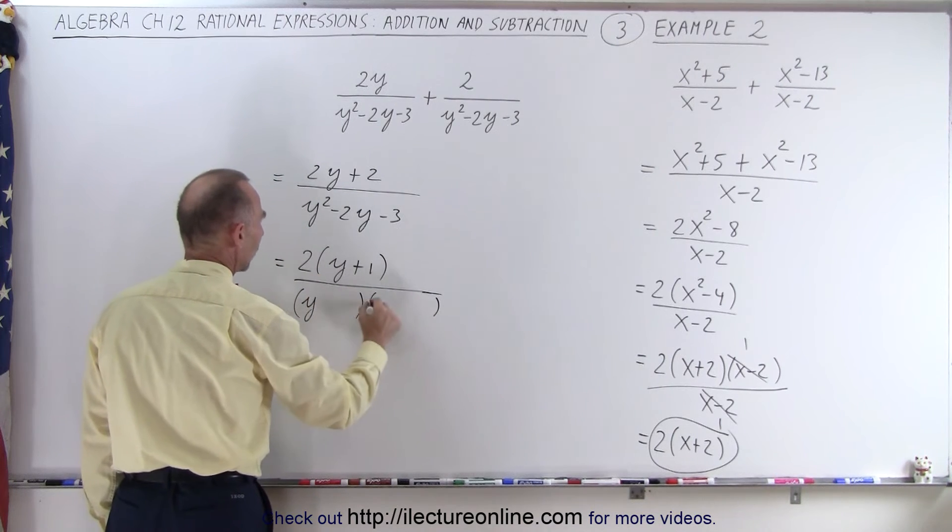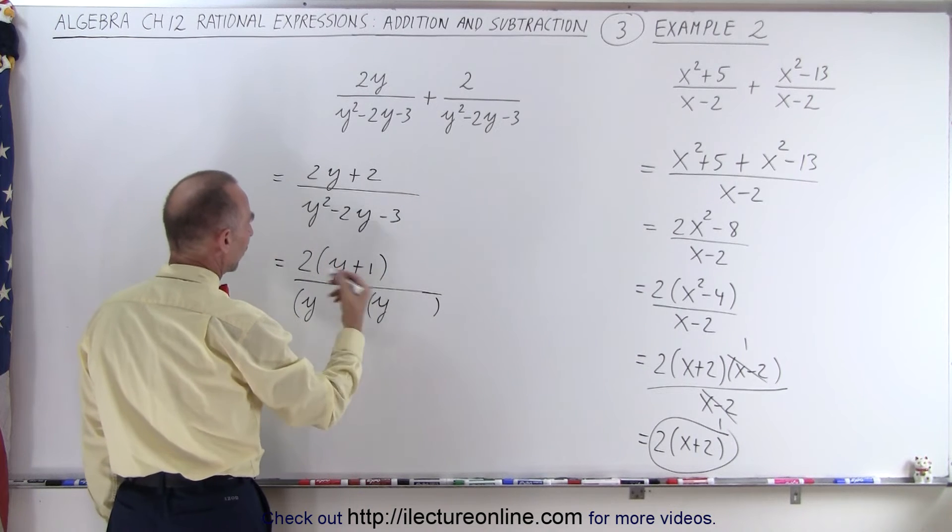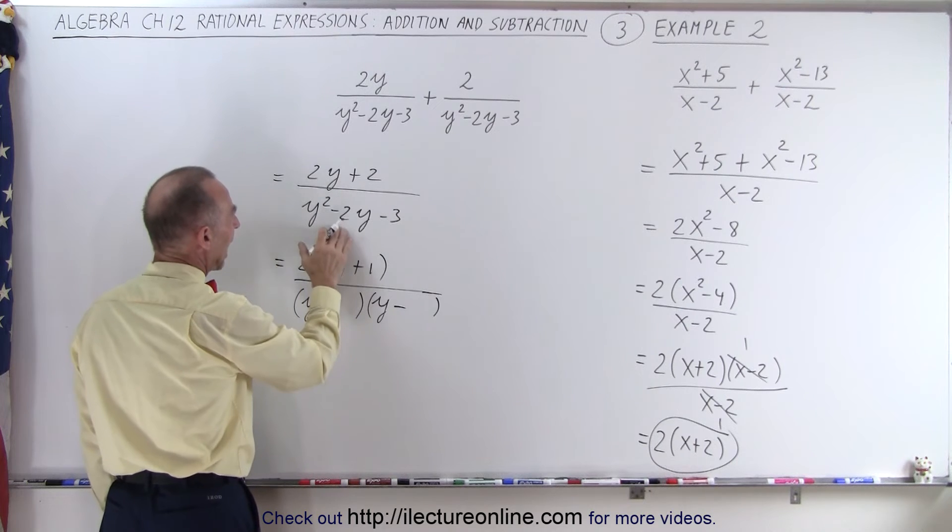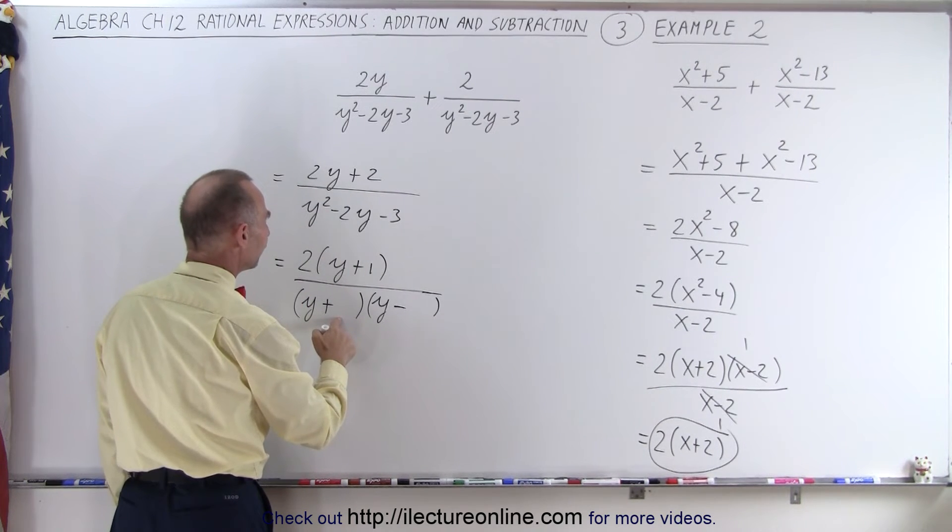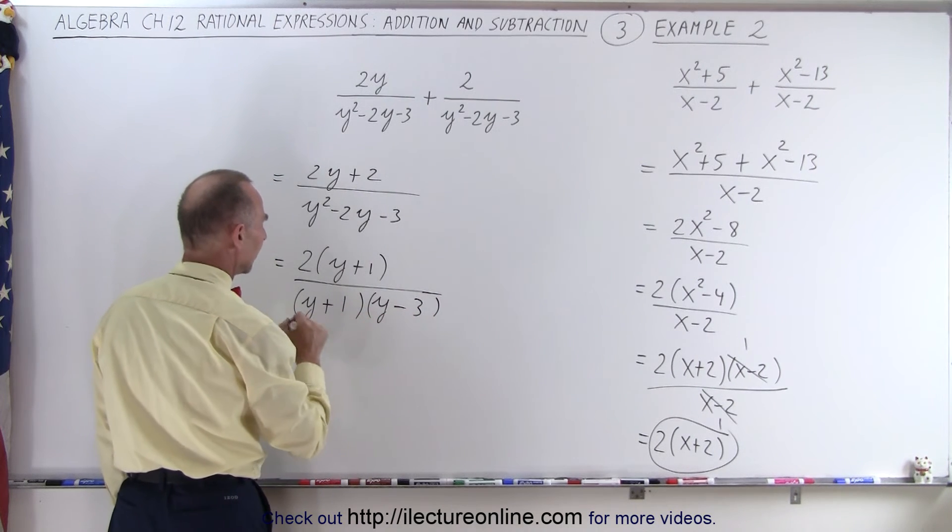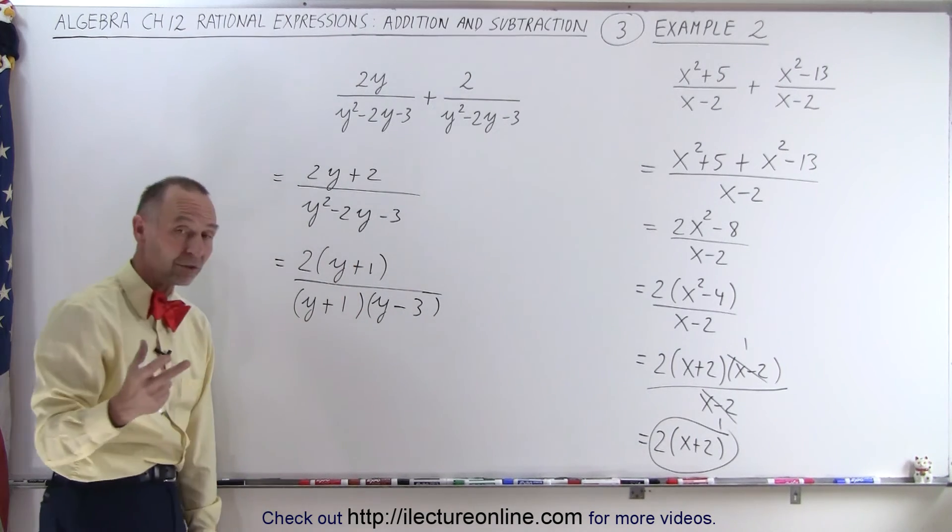This means we have a y and a y. Negative and positive. Negative, negative means 1 is positive, 1 is negative. The two numbers multiplied together give us negative 3. Added together gives us negative 2. So let's see here, how about a negative 3 and a positive 1. So y times negative 3 is negative 3y plus y is negative 2y. So that works out.